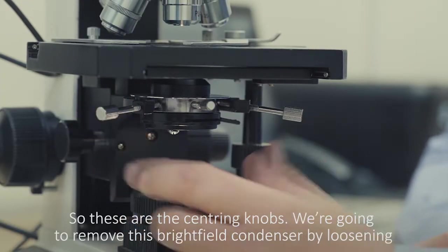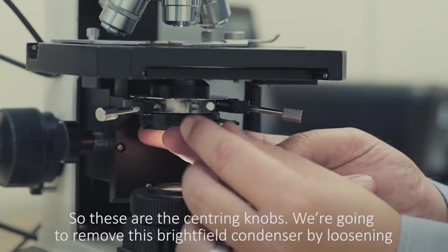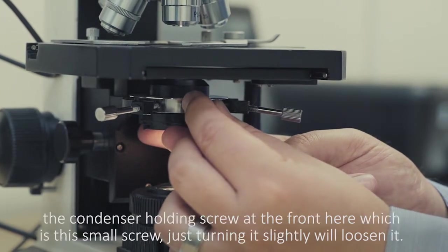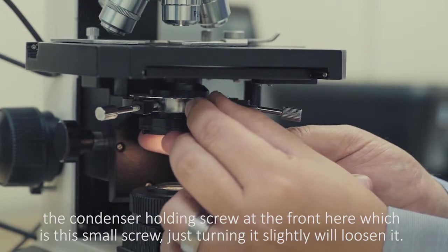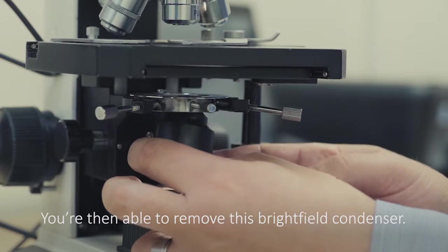We're going to remove this brightfield condenser by loosening the condenser holding screw at the front here, which is the small screw. Just turning it slightly will loosen it. We're then able to remove this brightfield condenser.